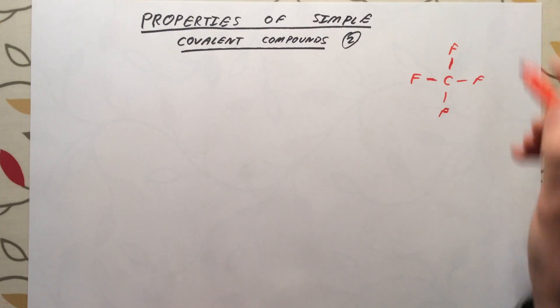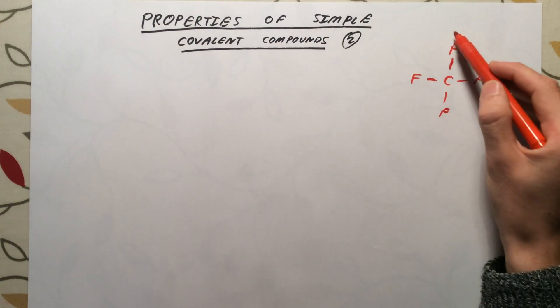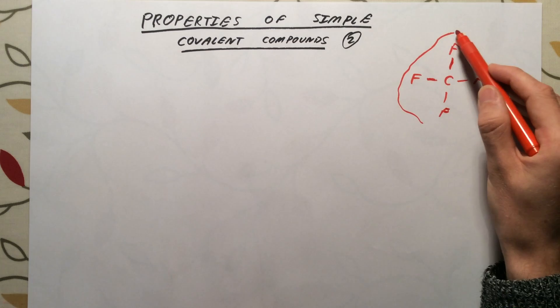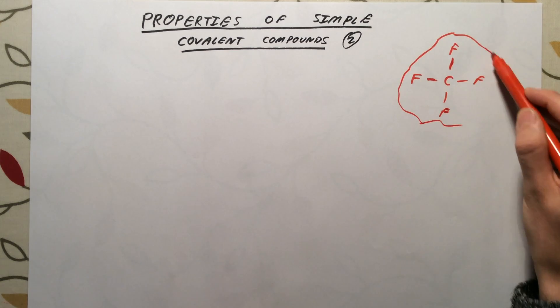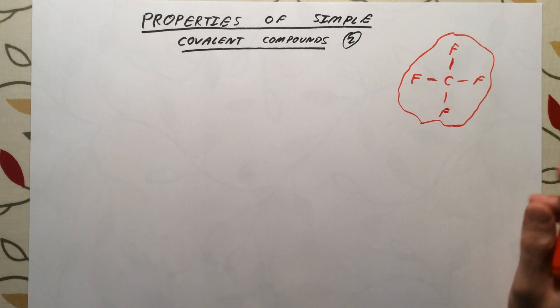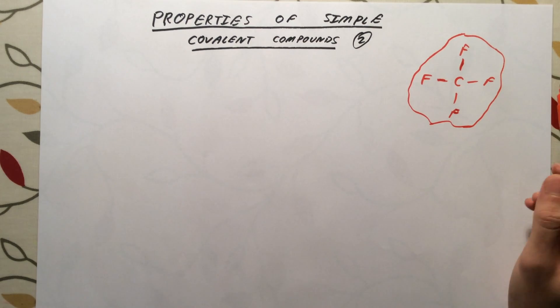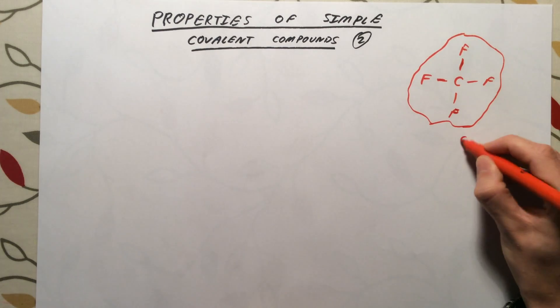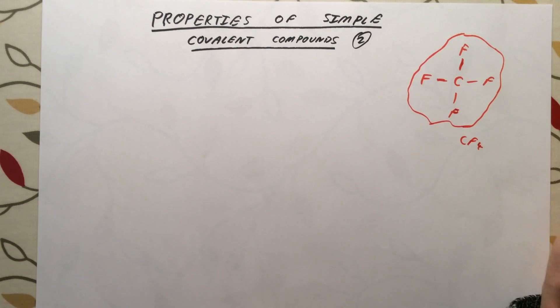We are going to use this to explain some of the properties of simple covalent compounds or simple covalent molecules. First thing to note, and one of the reasons why this is very different to ionic compounds, is that this unit, CF4, is an individual molecule. It is not attached to anything else.